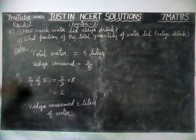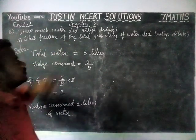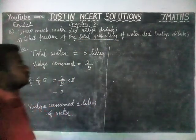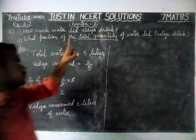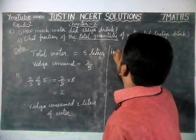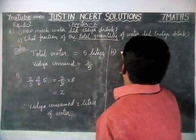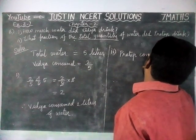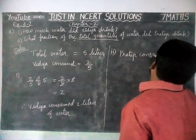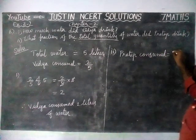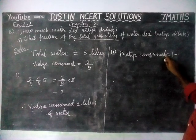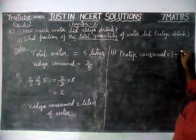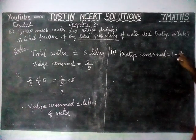Now the second question: what fraction of the total quantity? Here we have to underline the word 'total quantity'. We have to consider the total quantity is equal to 1 water bottle. From the 1 water bottle, 1 minus Vidya's consumed water is 2 by 5, so 1 minus 2 by 5.